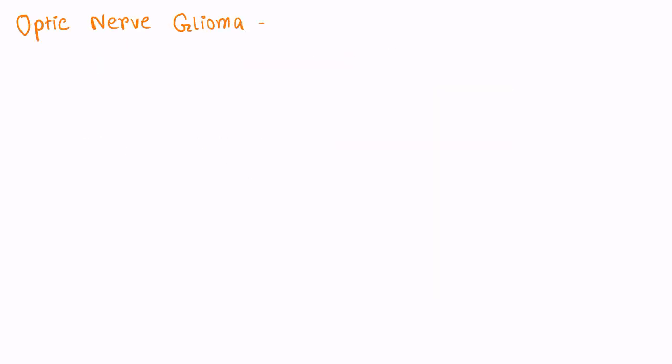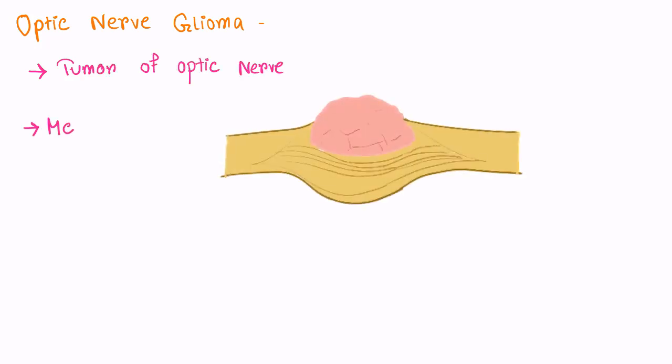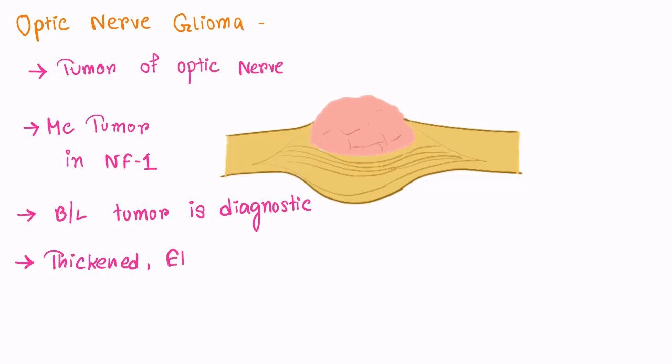The fourth criteria is Optic Nerve Glioma. This is the tumor of Optic Nerve. In fact, it is the most common tumor or most common malignancy in NF1. Bilateral tumor is diagnostic for NF1. The Optic Nerve becomes thickened, elongated and beaded.